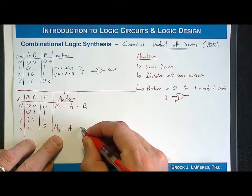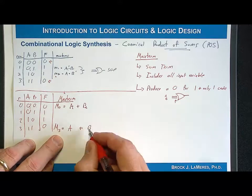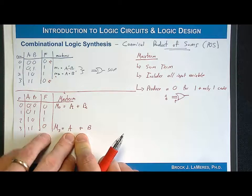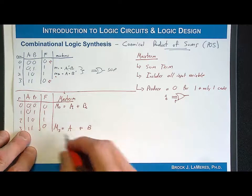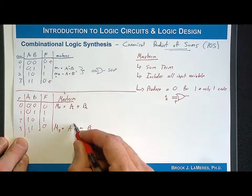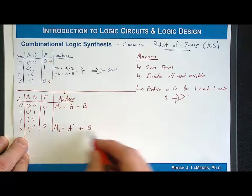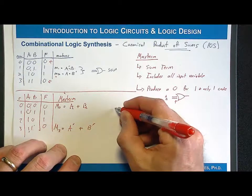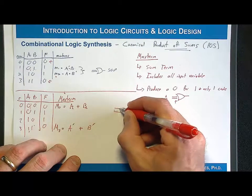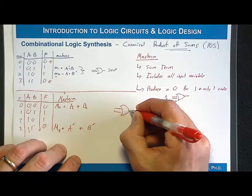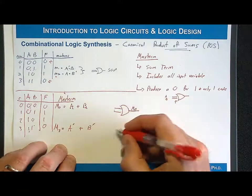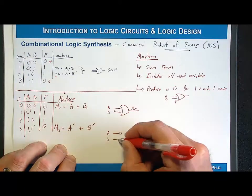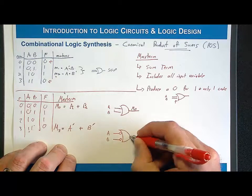Let's extend that to the max-term for row three. It's a sum term containing each input variable. We put inversions on it so it produces a zero for one and only one input code. For row three, A is a one, so we complement it; B is a one, so we complement it. So the OR gate for max-term zero, labeled M0, has A and B as inputs. Max-term three has A-not and B-not as inputs.